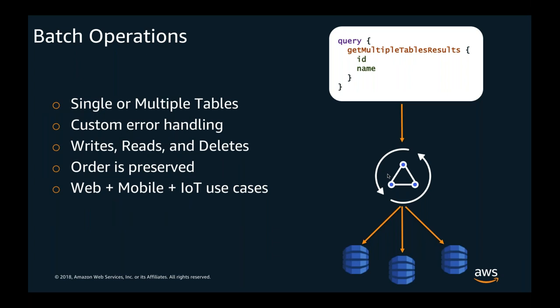AppSync resolvers can now make use of DynamoDB batch operations that span one or more tables in the region. This allows you to choose a list of keys in a single query, read records from multiple tables, write records in bulk to multiple tables, and conditionally write or delete related records across multiple tables. It's an incredible feature that makes it even easier to run batch operations in DynamoDB.